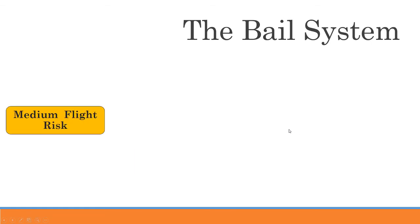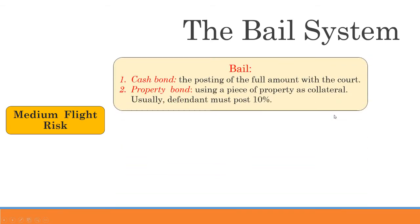If you are a medium flight risk, this is where bail creates that incentive for you to come back. The judge is going to set a bail — an amount to be paid for your release. If you show up to trial, you get your money back. If you're very rich and have that kind of cash, you can post a cash bond, meaning you pay the full amount.